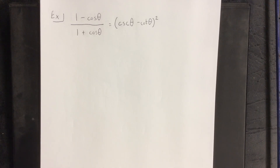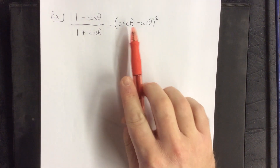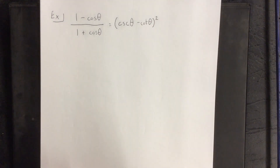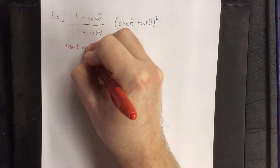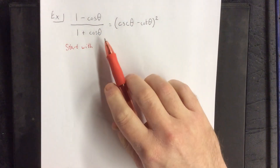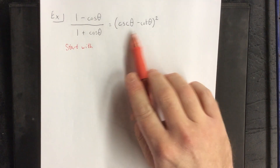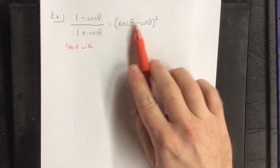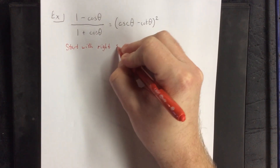We're going to continue verifying some identities. The next identity is: 1 minus the cosine of theta over 1 plus the cosine of theta, equals the cosecant of theta minus the cotangent of theta, quantity squared. Step 0: we decide which side to start with. On the left side, everything is already in terms of sines and cosines, one single fraction, not a lot of algebra needed. On the right side, we don't have things in terms of sine and cosine, we have a binomial being squared, so I'm going to start with the right side.